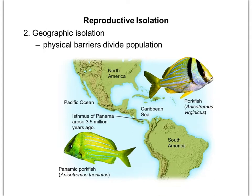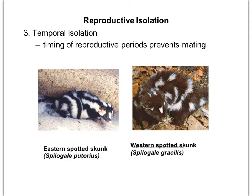The next type is geographic isolation — whenever members of a population are physically divided by some kind of barrier. For example, the Isthmus of Panama, a very narrow strip of land, didn't rise up out of the ocean until three and a half million years ago. When that happened, a population of pork fish got separated. Living in two different environments on either side of the isthmus, they actually became two separate species. You can tell by their scientific names: they share the same genus, showing they're closely related, but they are now two different species.